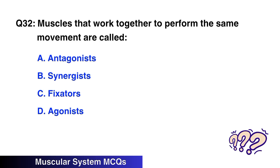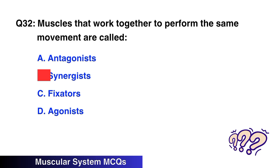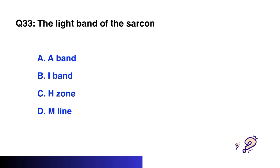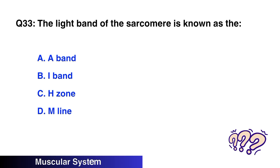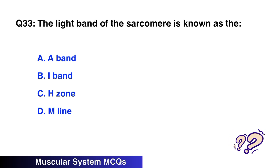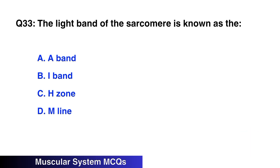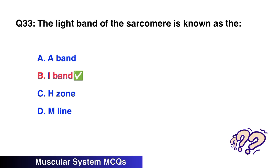Question No. 32: Muscles that work together to perform the same movement are called — the right option is B: Synergists. Question No. 33: The light band of the sarcomere is known as the — the right option is B: I-band.